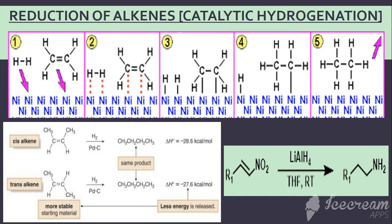As we all know, an increase in the hydrogen content or a decrease in oxygen content of an organic compound is what is known as reduction. It may also be described as removal of oxygen, addition of hydrogen, and gain of electrons. The addition of hydrogen to an unsaturated system in the presence of a catalyst, or addition of molecular hydrogen on a metal, is what is known as catalytic hydrogenation, which we shall be studying.